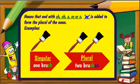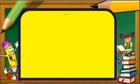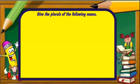To form the plural we have two brushes. So to form the plural we add es since that word brush ends with sh. So let's look at some examples. Give the plurals of the following nouns.